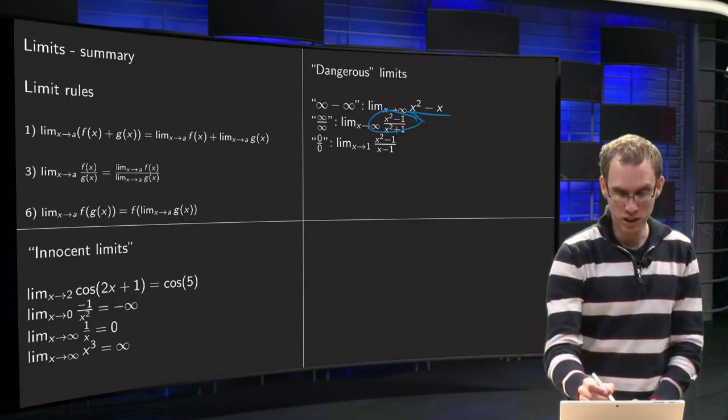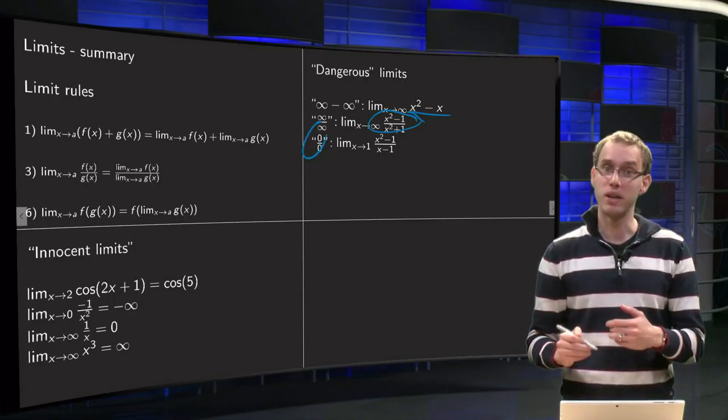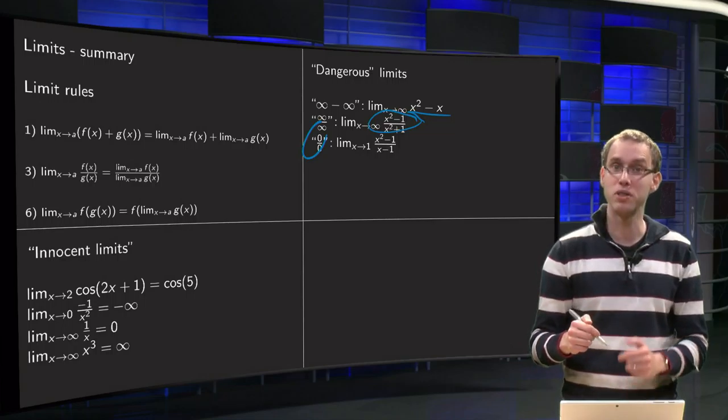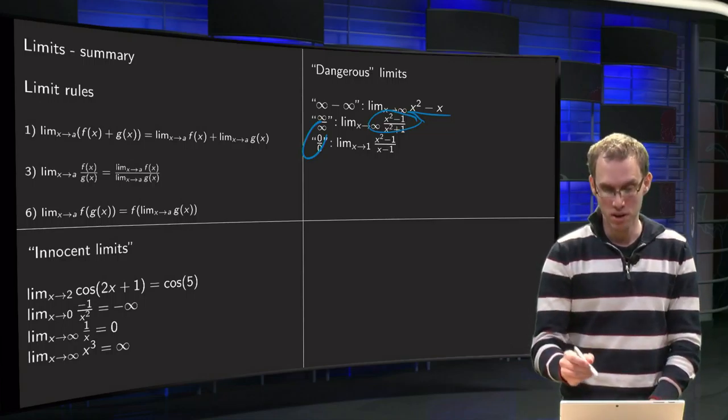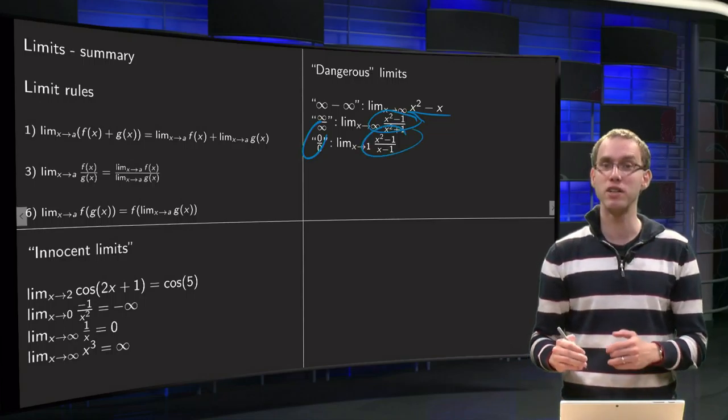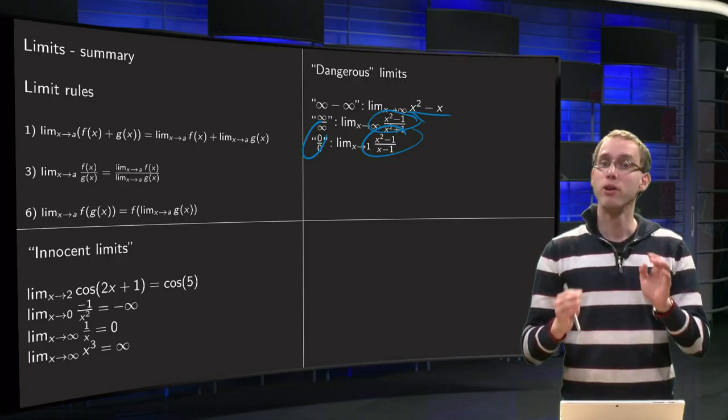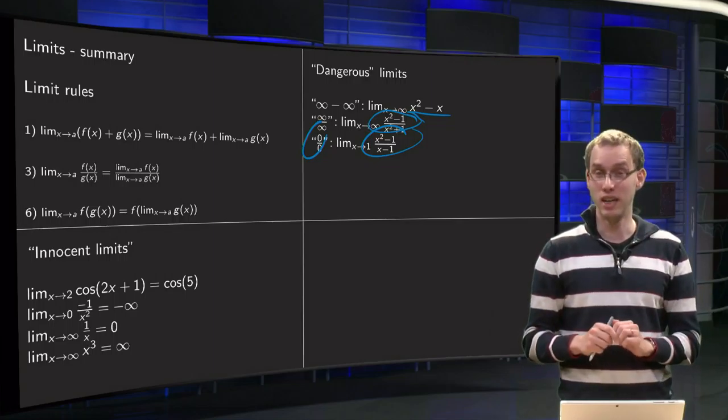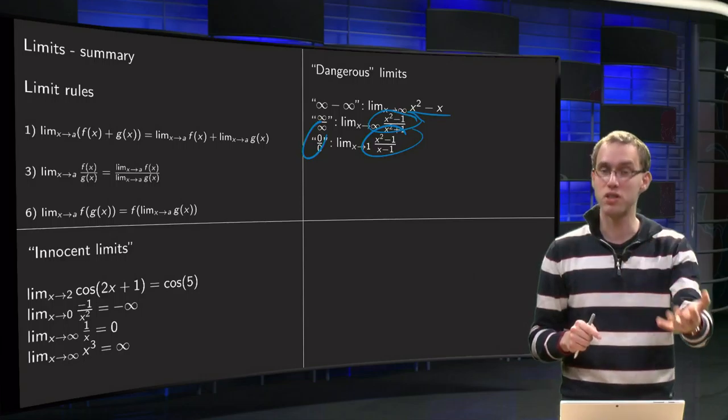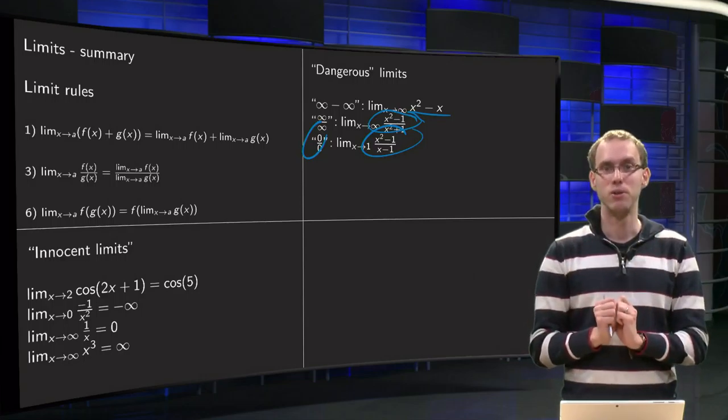Or if you have 0 over 0, also a dangerous limit. You cannot just cancel out the 0's because you cannot divide by 0. For example, x squared minus 1 over x minus 1, for x going to 1. You have learned how to resolve all those dangerous cases in all the previous lectures, so you can do those.